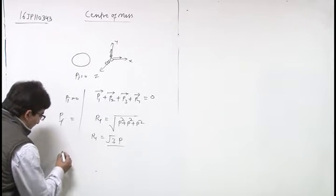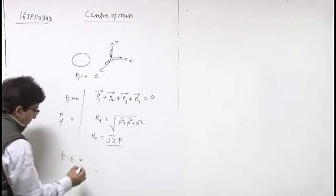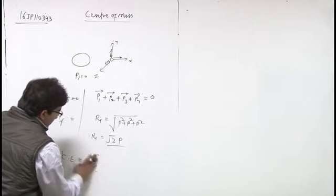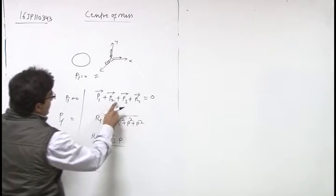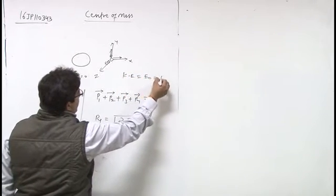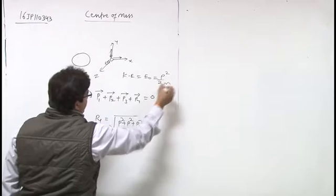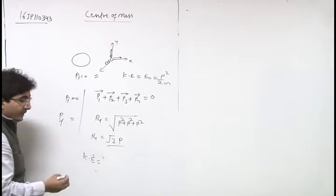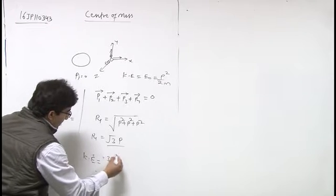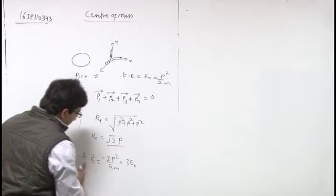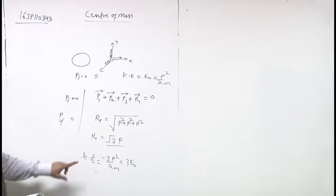Kinetic energy of the whole system: kinetic energy of one particle is given as E0, so E0 equals to P square by 2M. And kinetic energy of fourth particle, fourth fragment, is 3P square by 2M, so this is 3E0. So fourth particle has kinetic energy 3E0.